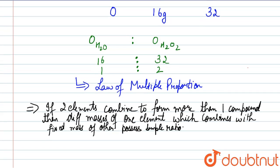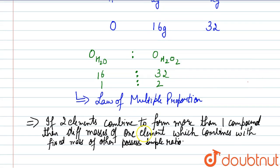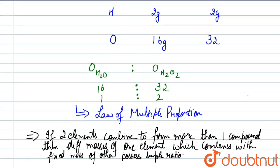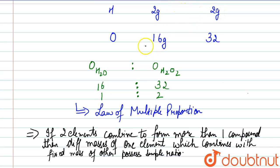Here the fixed mass is that of hydrogen, which is 2 grams in both cases. Hydrogen and oxygen combine to form two different compounds — water and H₂O₂. The different masses of oxygen (16 g and 32 g) combining with the fixed mass of hydrogen possess a simple ratio of 1:2. Therefore, this data illustrates the Law of Multiple Proportions.